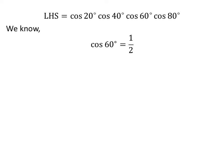We know the value of cosine of 60 degrees is equal to one half. Plugging the value of cosine of 60 degrees into the left hand side of the identity gives us: left hand side equals one half times cosine of 20 degrees times cosine of 40 degrees times cosine of 80 degrees.